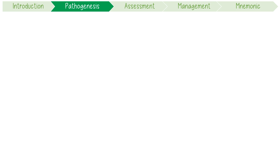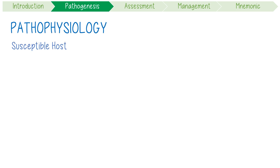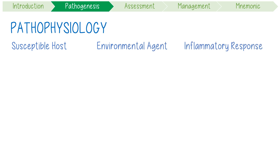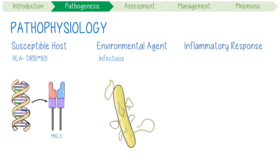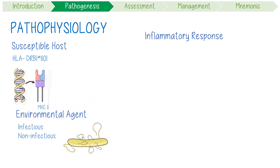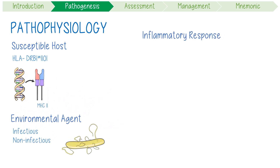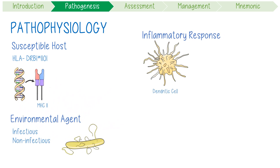Its pathogenesis involves a susceptible host being exposed to an environmental agent which triggers an inflammatory response. Genetically, HLA-DR-B1-11-01 is highly associated with the disease. Potentially responsible infectious agents include Mycobacterium tuberculosis, but non-infectious triggers like insecticides might also be possible.